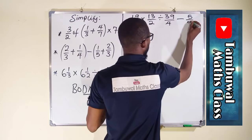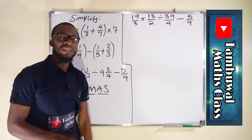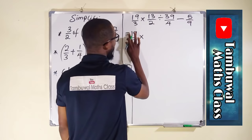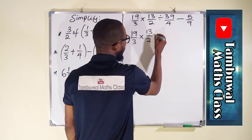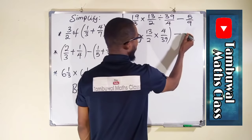From the rules, division and multiplication are done simultaneously from left to right. Remember that division can be converted into multiplication by taking the reciprocal of the next term. So the expression becomes 19 over 3 multiplied by 13 over 2 multiplied by — taking the reciprocal of 39 over 4 — which is 4 over 39, all in parentheses, minus 5 over 9.